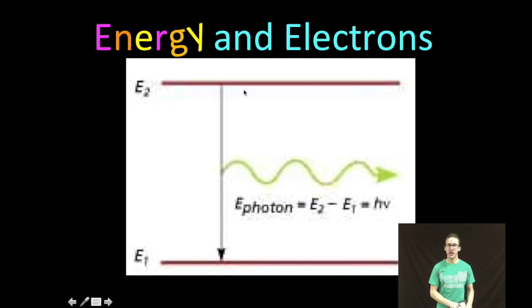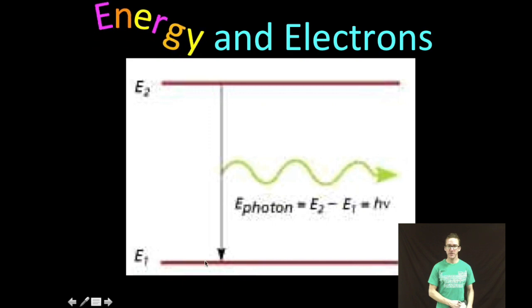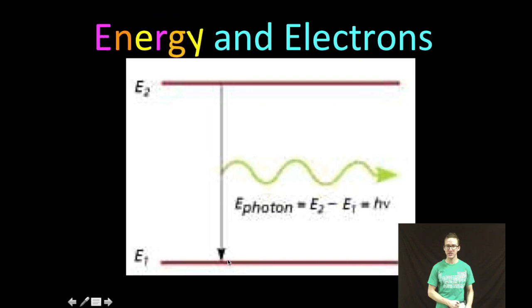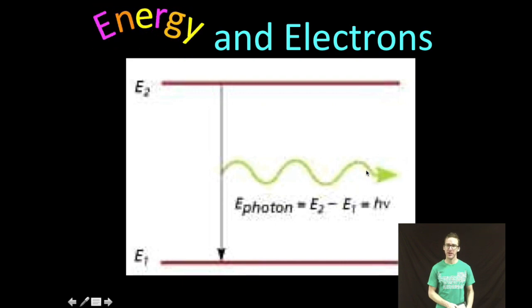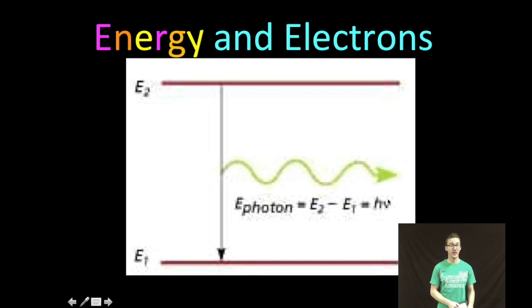Here's a really great image to help you better understand this idea. Here I've got my initial energy level. Here's my second energy level. As the electron falls back down from that second to the first energy level, it's going to give off a photon worth of energy. That energy can be calculated by measuring the frequency of that photon of light that's given off. Plug it into the formula for energy of a photon, which is Planck's constant times frequency.